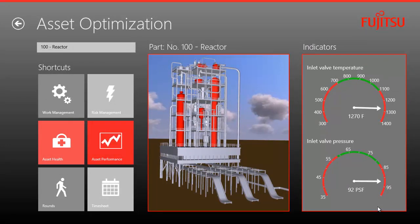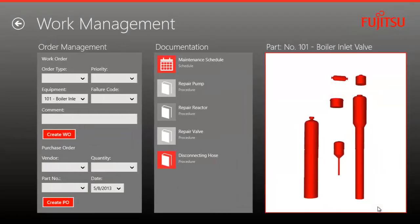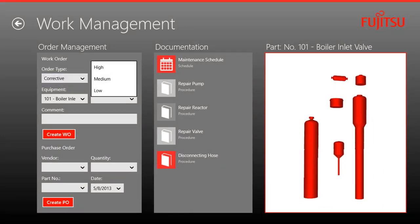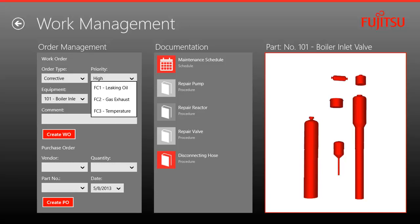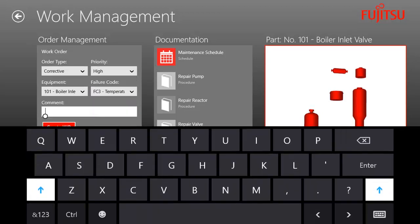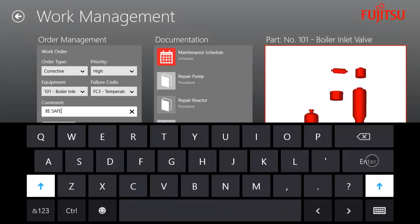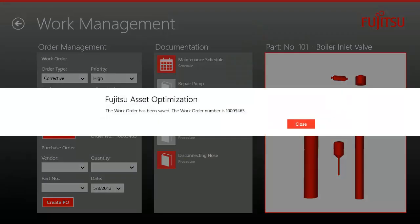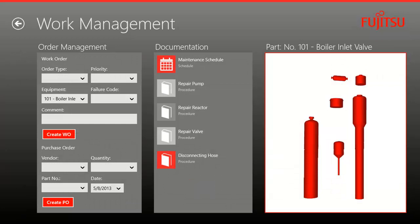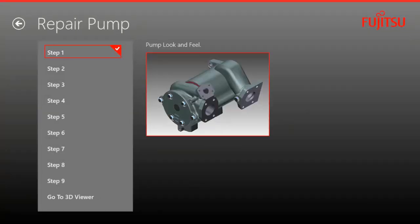Now it's time to take action. By clicking on work management, my shift supervisor can produce work orders on the fly. They can tap to select a work order type, priority failure code, and even add a comment. They can initiate the purchase order to the vendor and see the required documentation and parts that will be used by the technician during the resolution.